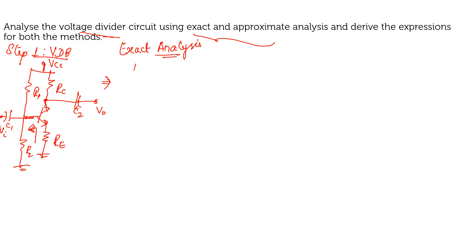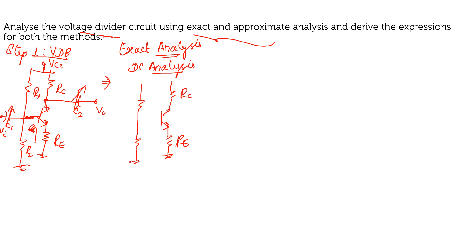For DC analysis, you will open circuit both the capacitors. If I redraw the circuit with capacitors open-circuited, you will get resistor RE, resistor RC, and across the input you will have R1 as well as R2 with base, collector, and emitter. VCC is drawn separately with capacitors open-circuited.